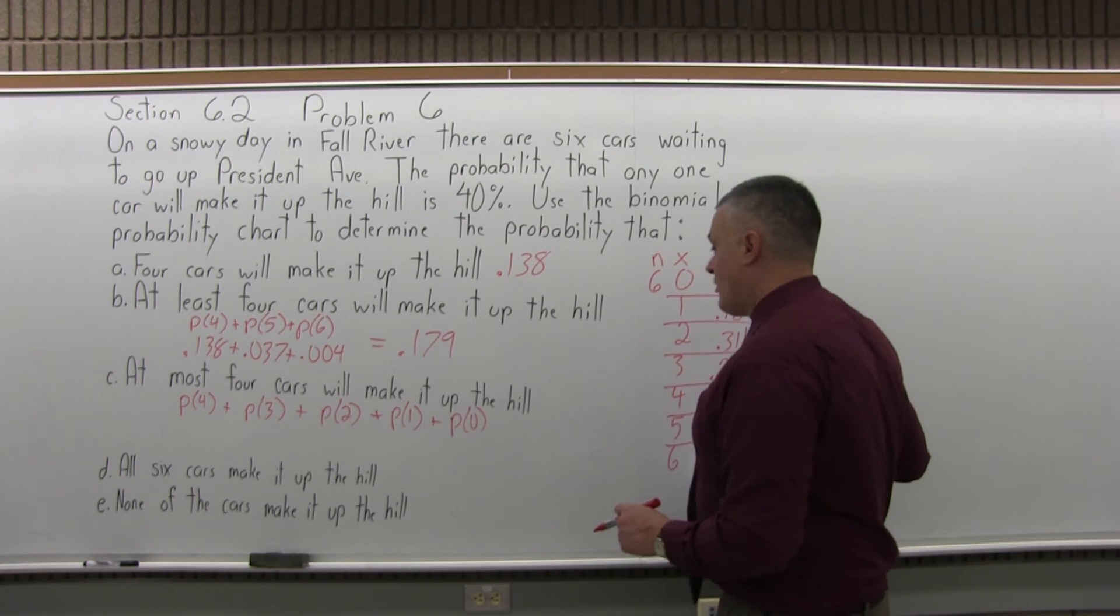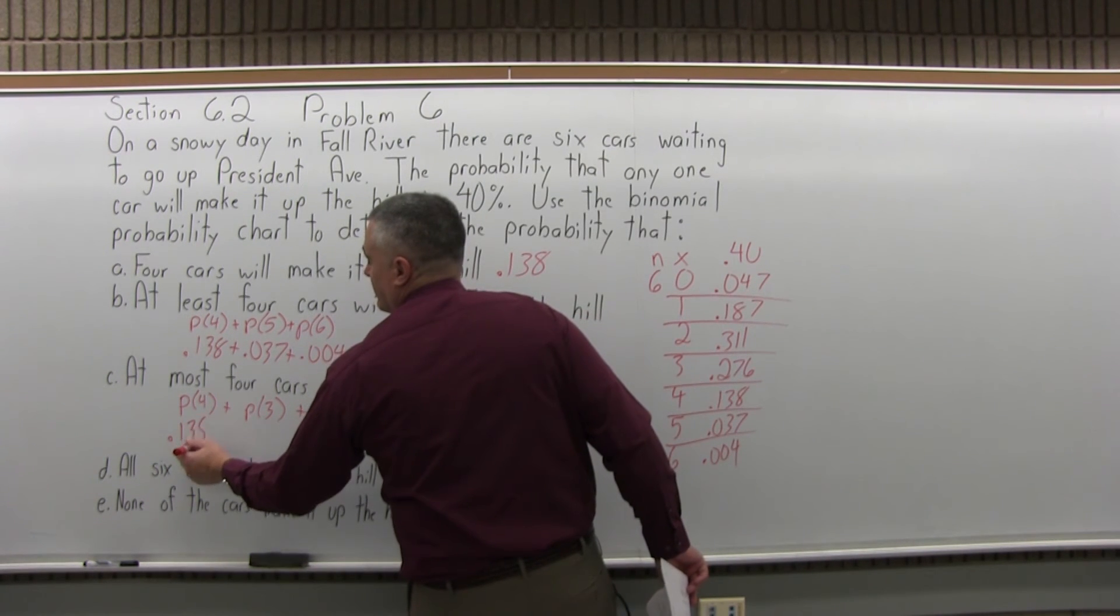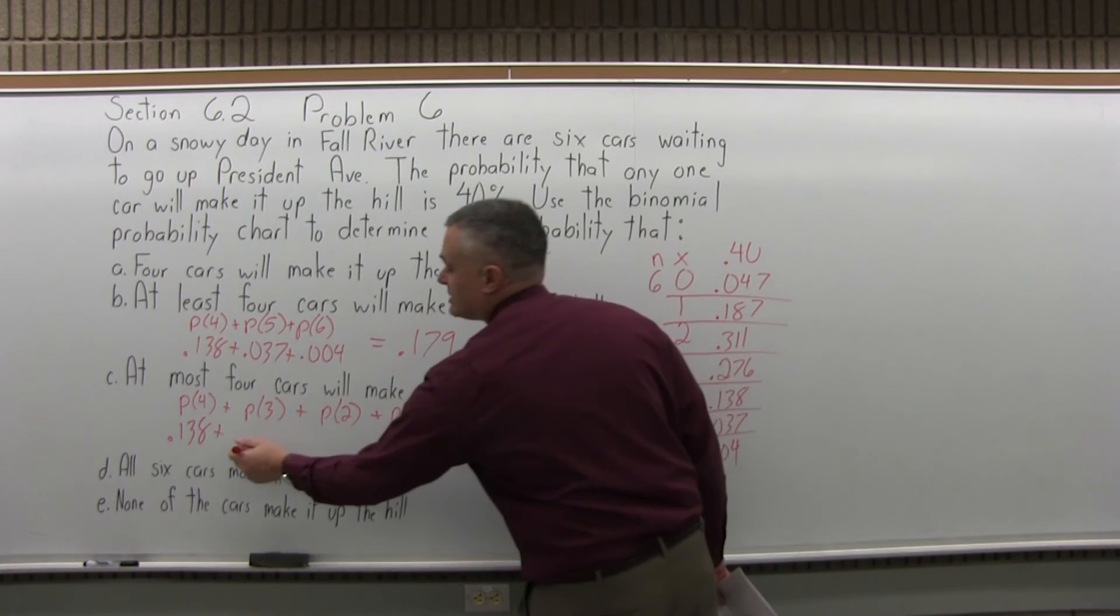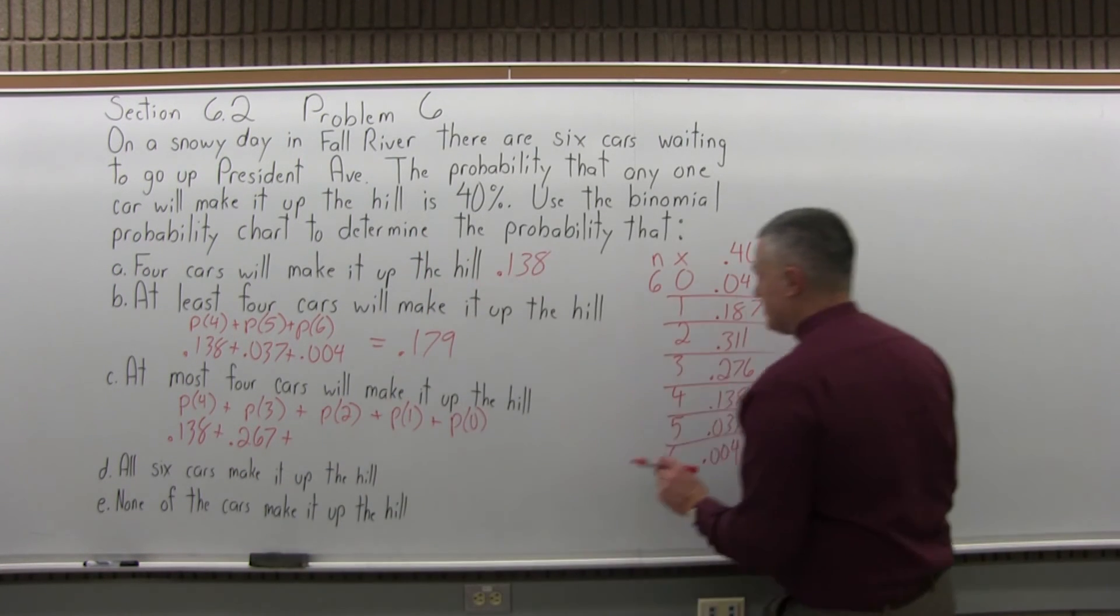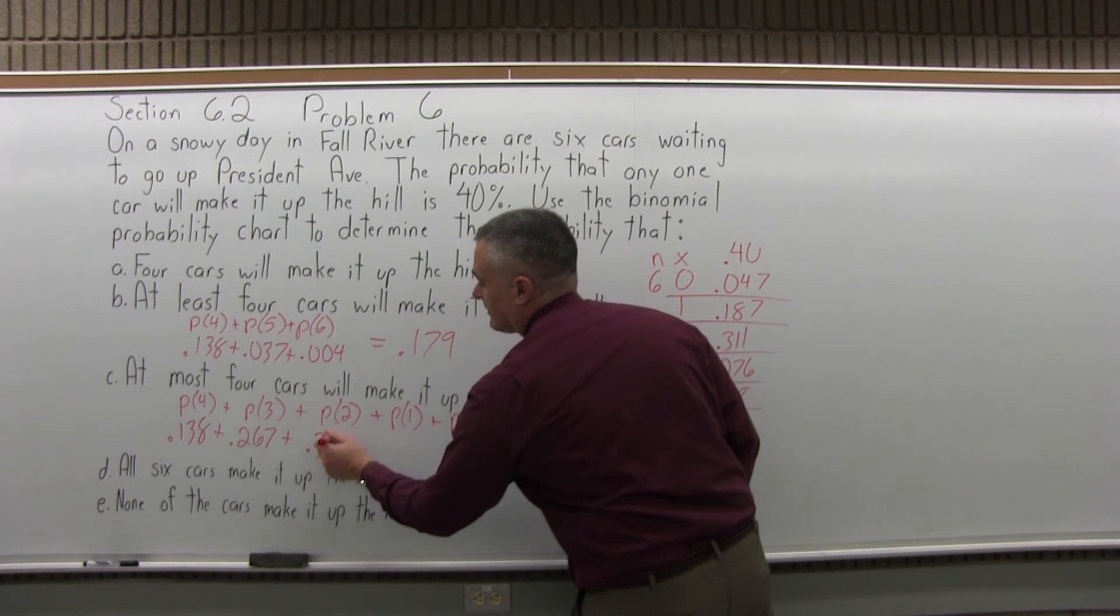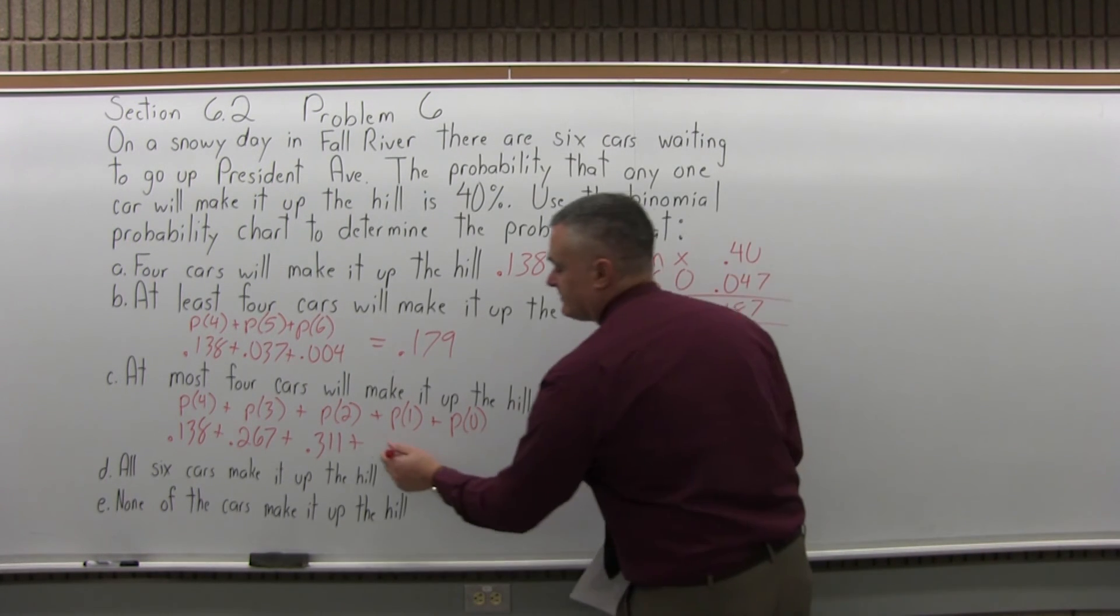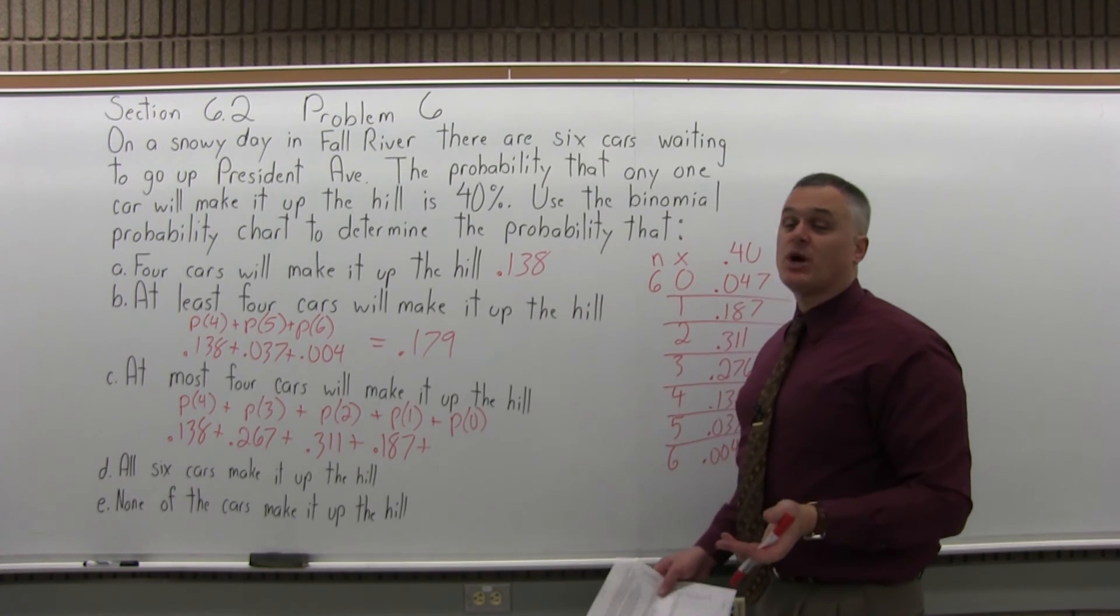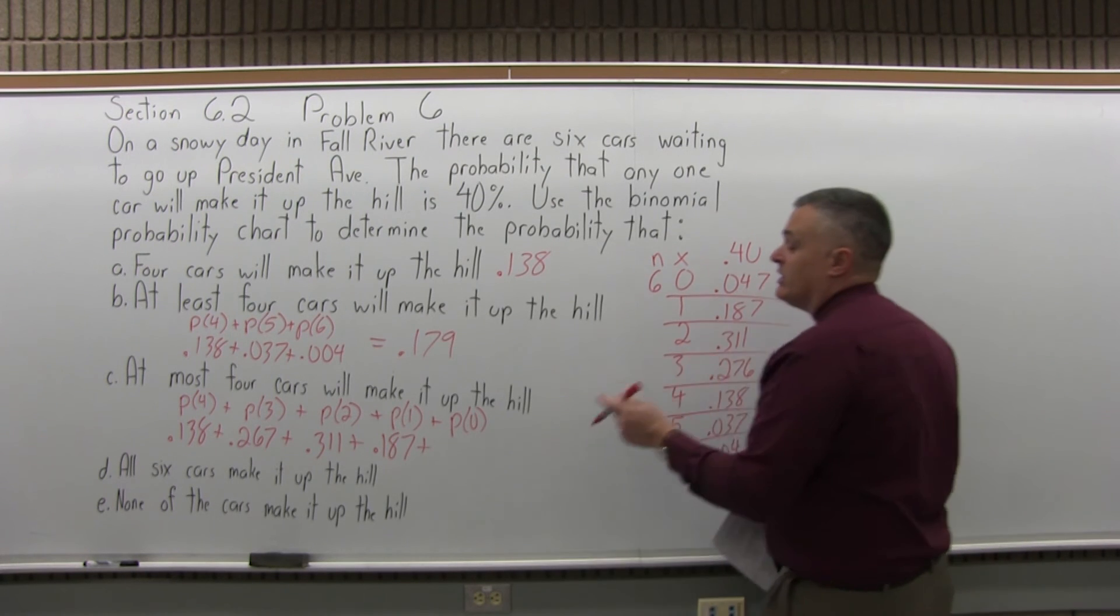The probability for four, from what we looked up, is .138. The probability for three is .276. Plus the probability for two, I have .311, plus the probability for one is .187. Plus the probability for zero, that's a common mistake, people would forget about the zero, you can't forget about that, for zero is .047.